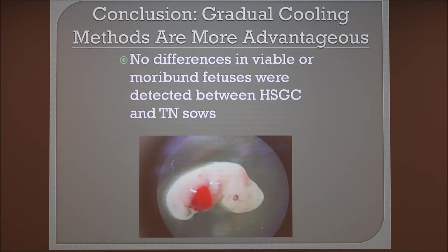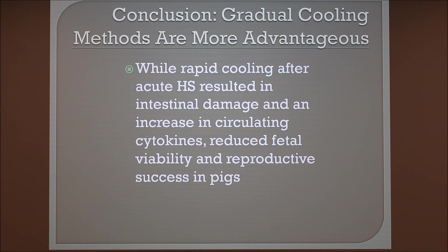We found no differences in viable or moribund fetuses between the heat stress gradual cooling group and the thermal neutral control, which further proved that gradual cooling methods were the closest we could attain to a thermal neutral environment. Additionally, rapid cooling during heat stress resulted in intestinal damage and increased cytokine circulation, and it also reduced fetal viability and reproductive success in pigs.